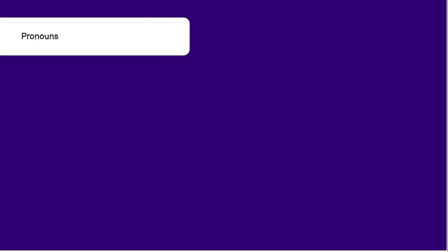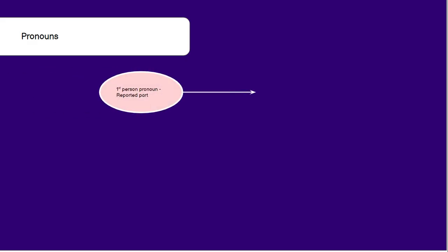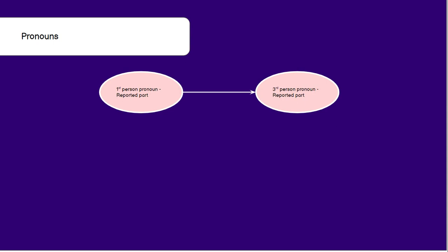Talking about changes in pronouns. First person pronouns in the reported part will change to third person pronouns. For example, 'She said I am going to school' — 'I' is first person, so it changes to third person: 'She said that she was going to school.' We can see 'is going' has changed to 'was going' as a tense change, and 'she' is the third person pronoun.